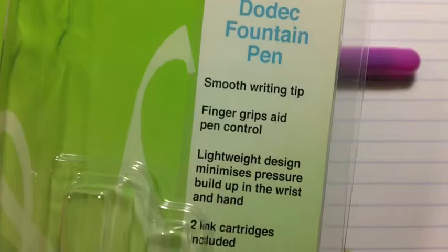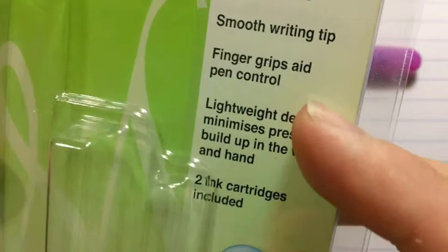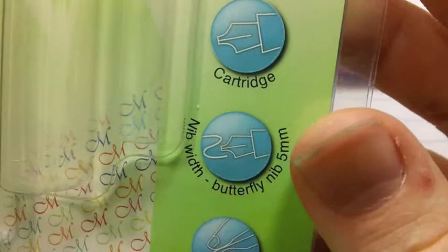It comes in a simple blister pack. It says Manuscript Dodec there, smooth writing tip, it's got two cartridges, lightweight design, finger grip, finger grips aid pen control—comma in the wrong place.